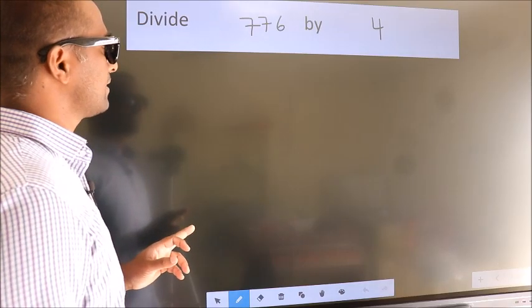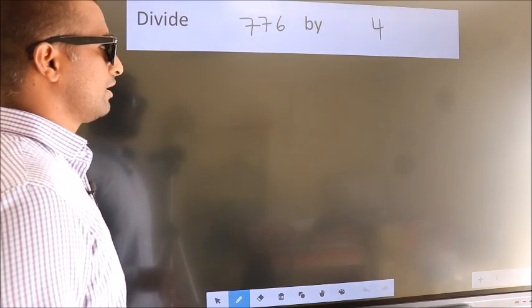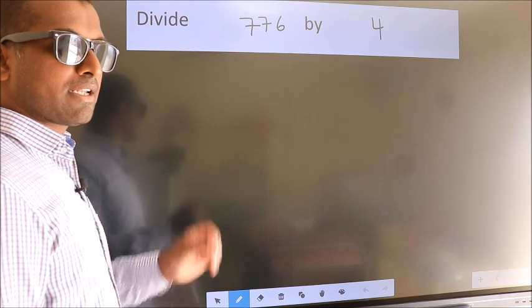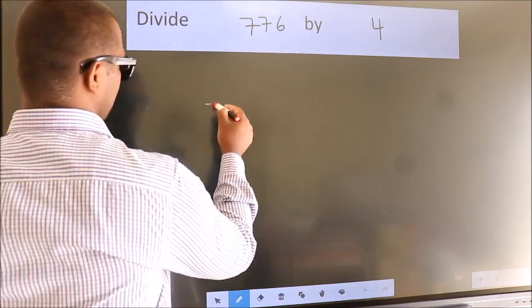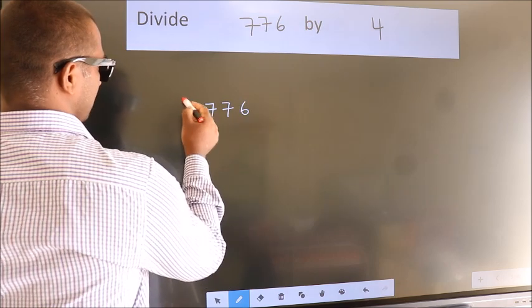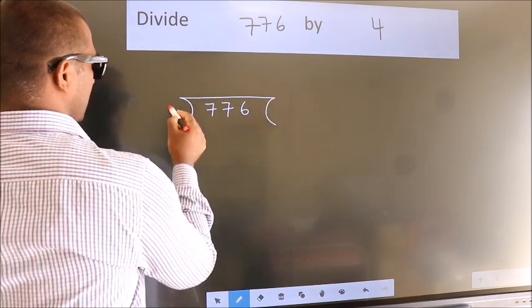Divide 776 by 4. To do this division, we should frame it in this way: 776 here, 4 here.